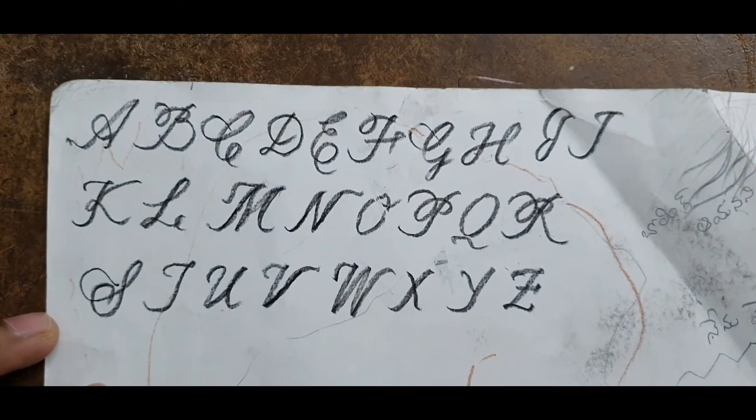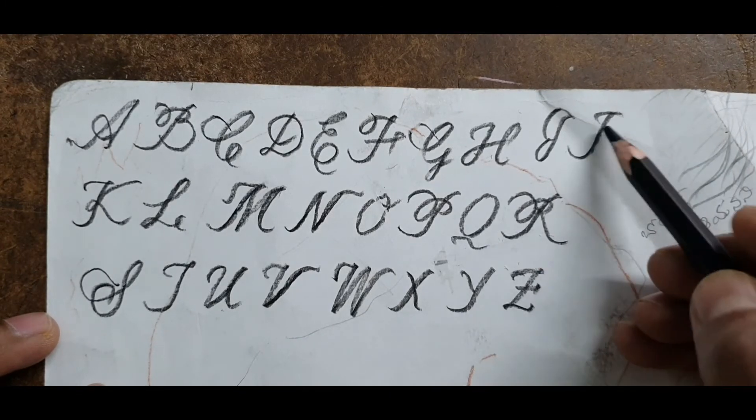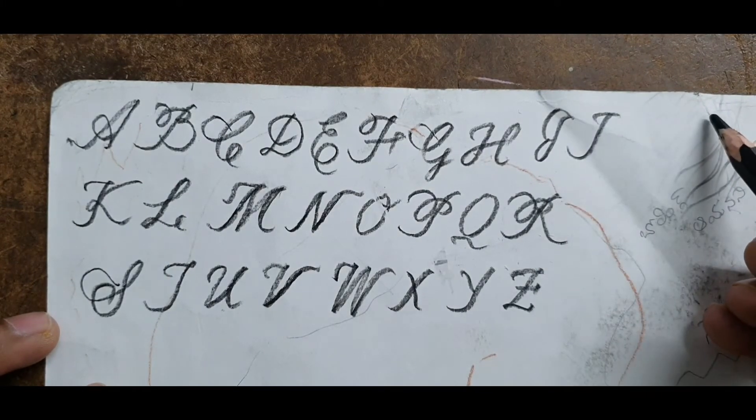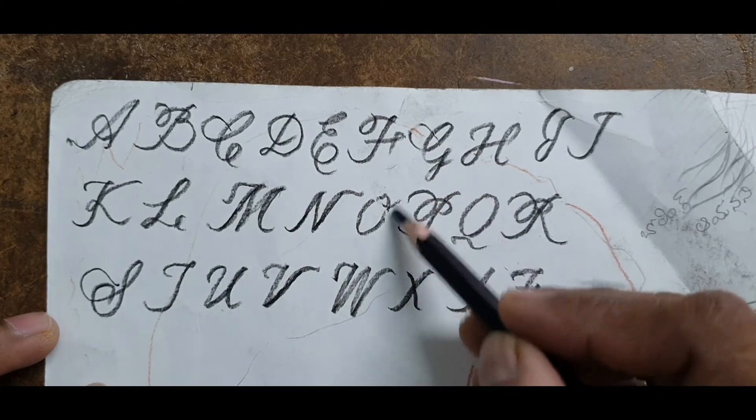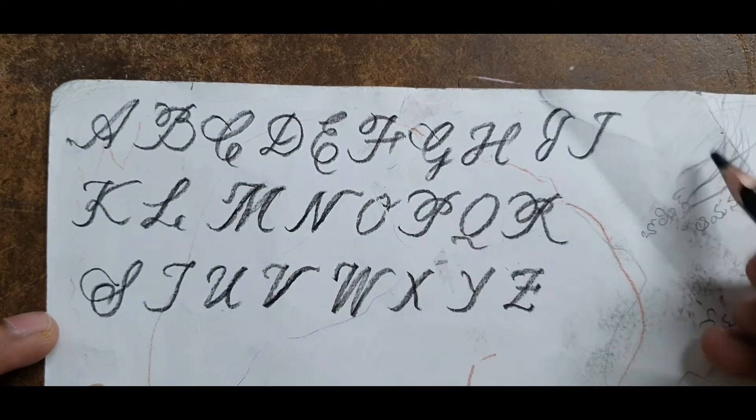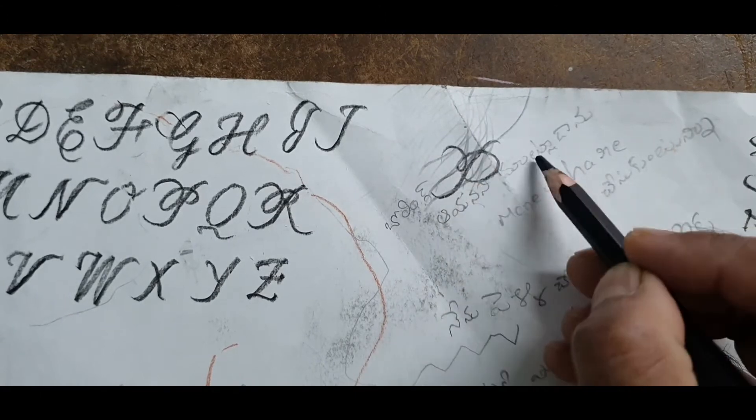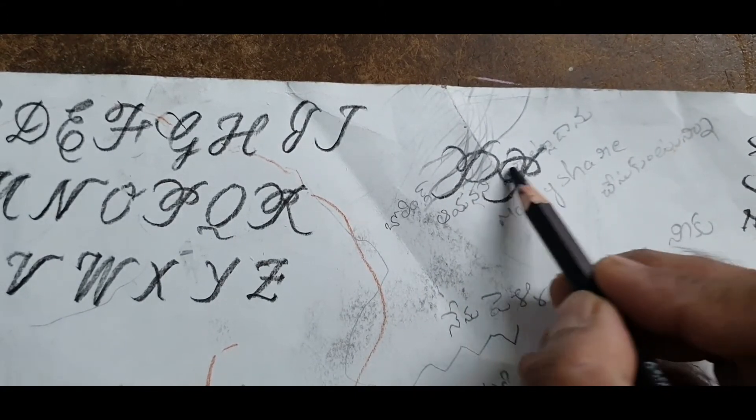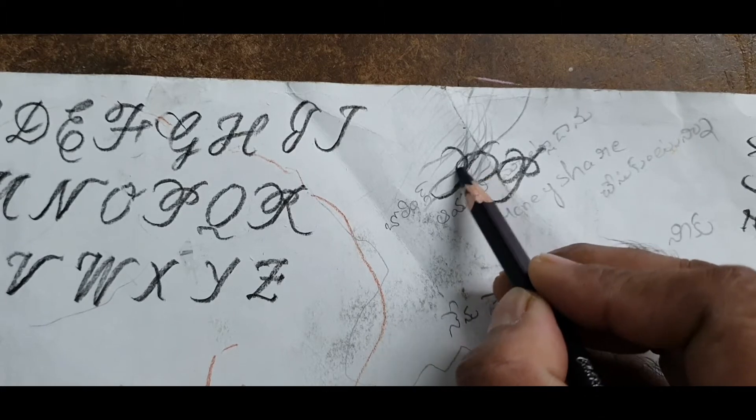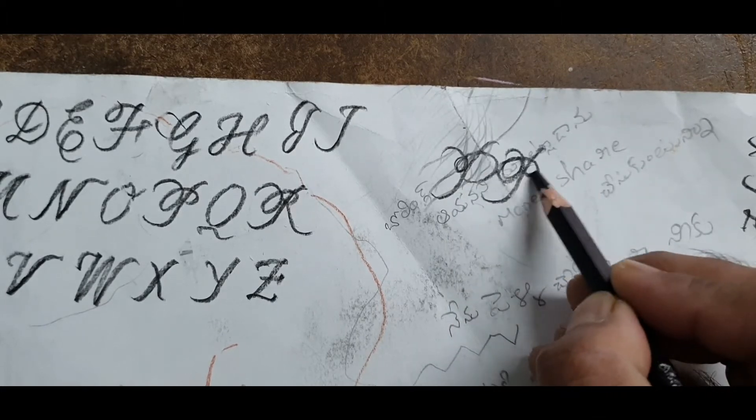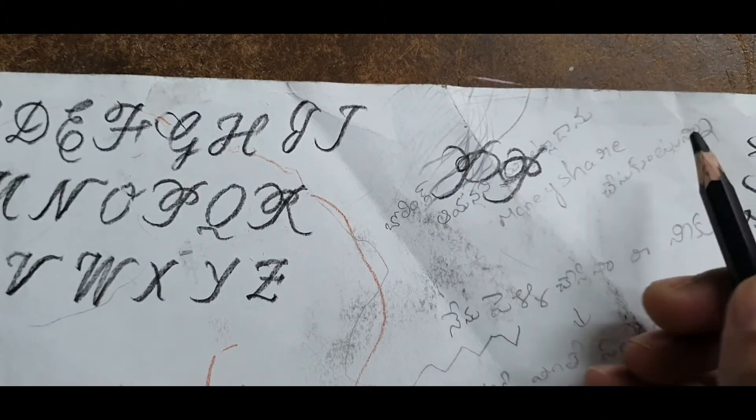This is something which needs to be observed carefully. You need to understand what is the beauty in each and every letter. For example, if you take P, it can be written this way and it can be written this way. This curve should be bigger and this one should be small, only then it looks beautiful.